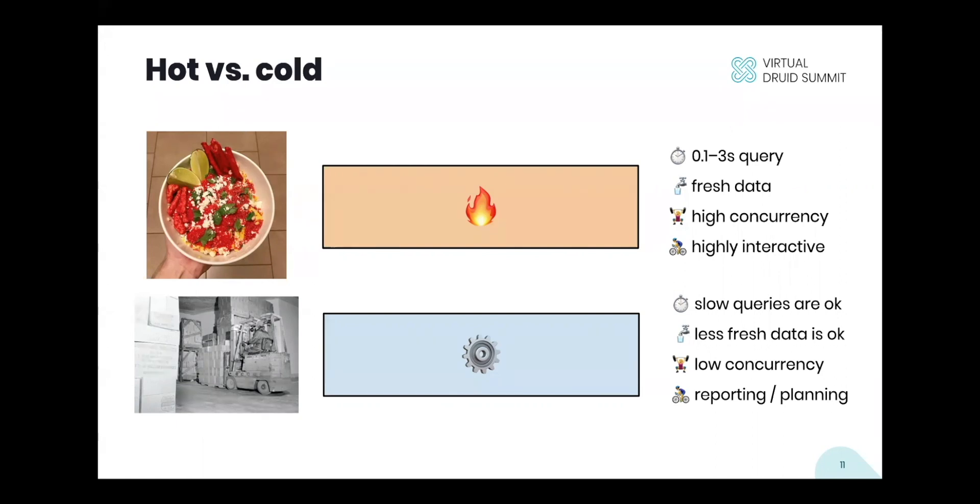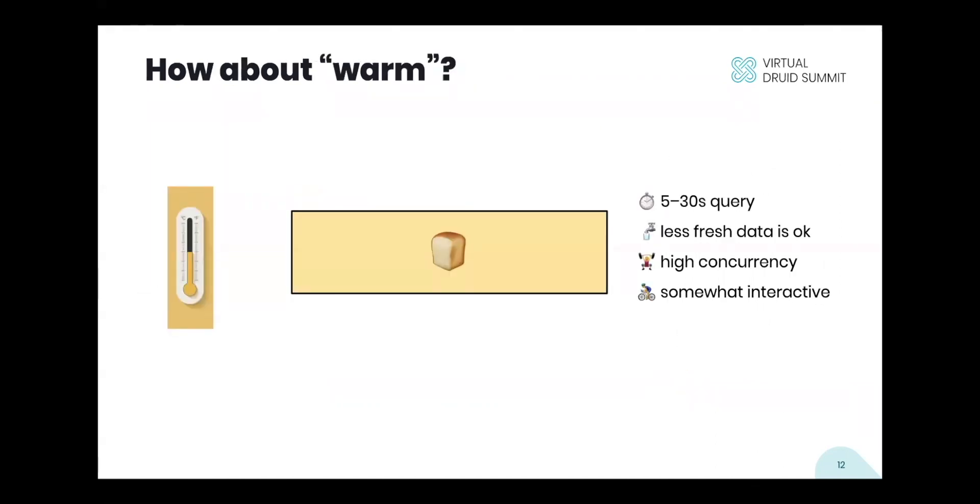So that's hot and cold, the two ends of the spectrum. But what about warm? Warm is, do we have warm data?